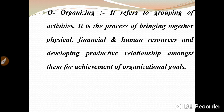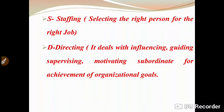Number third is Staffing. Staffing ka simple meaning hai: selecting the right person for the right job. It is the function of manning the organization structure and keeping it manned. If we select a right person for the right job, the benefit to our organization will be 100%. For example, if you select a finance person and put him in marketing, that will be a problem — he will not be able to take correct and reliable decisions. So staffing means selecting the right person for the right job.